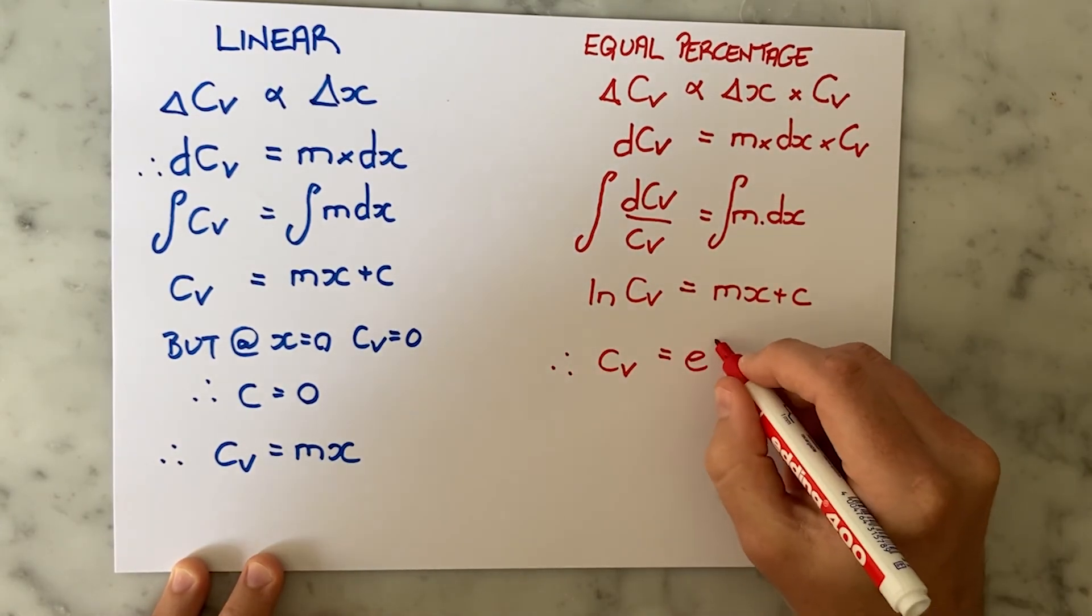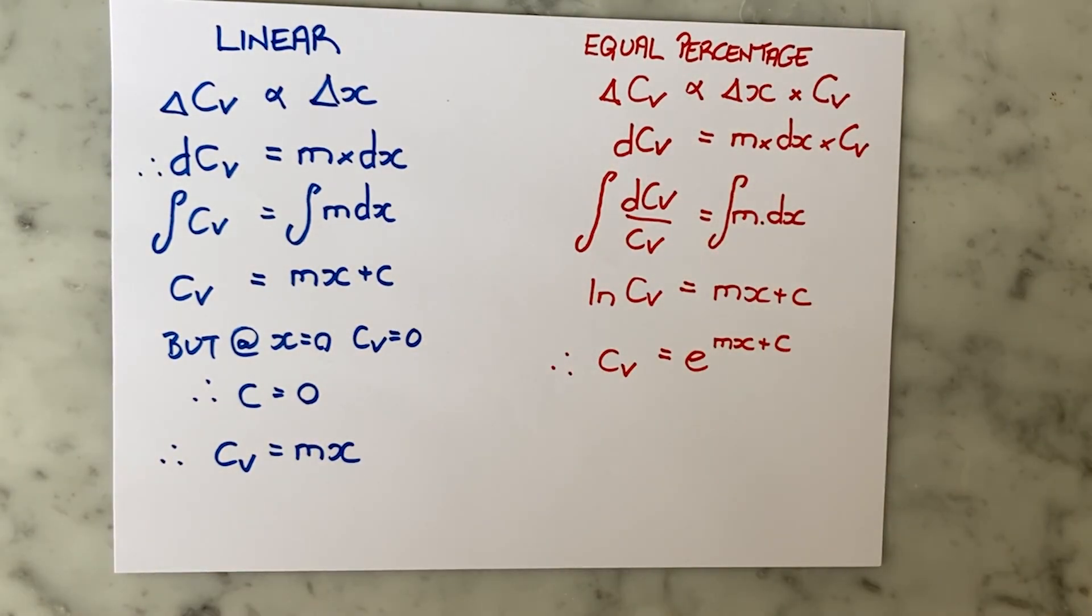Except this time we can't chuck away the constant of integration C, because if we try and substitute the CV of 0 for a valve opening of 0 we get an unsolvable equation. I cannot raise e to any power and then obtain 0, so I am stuck with both the M and the C.